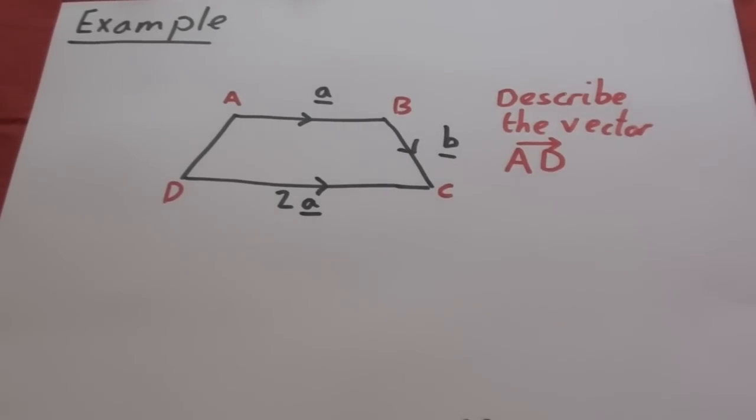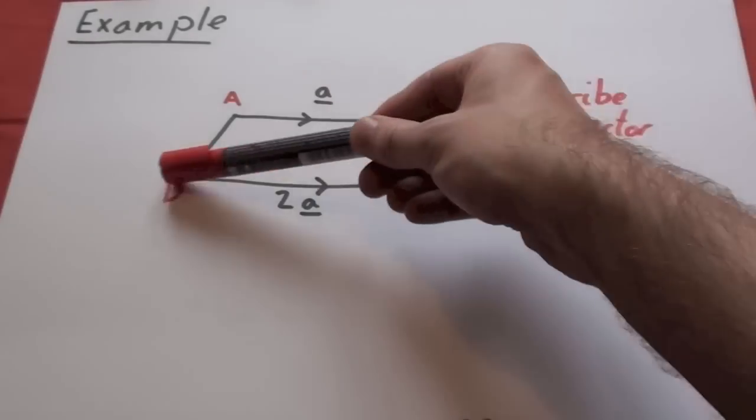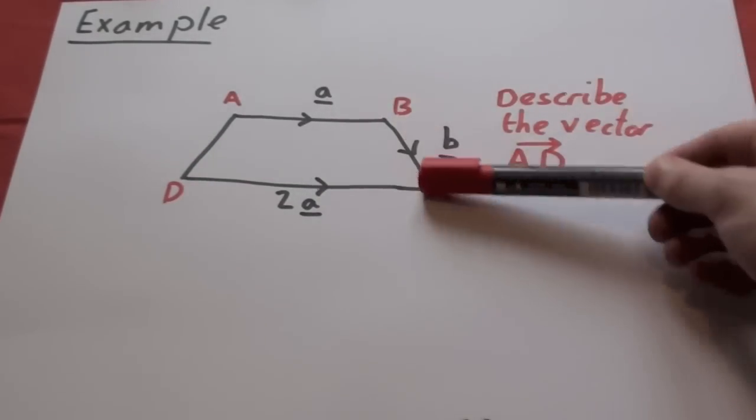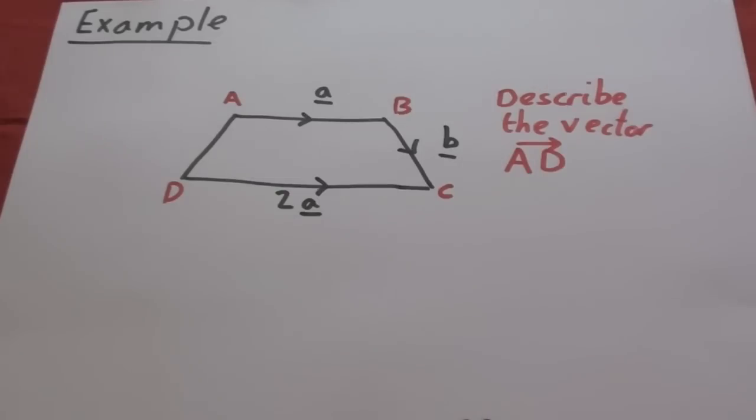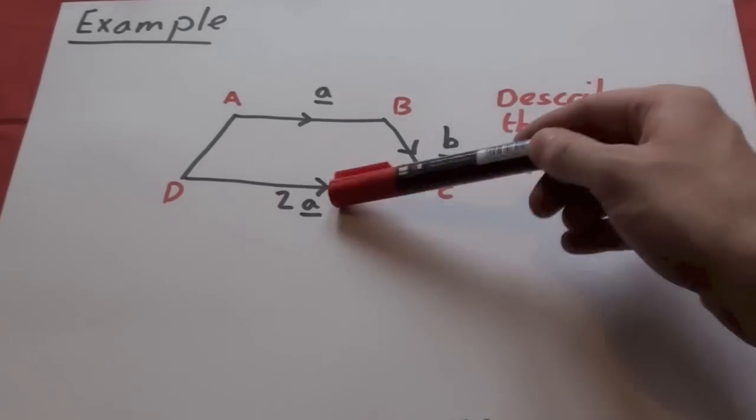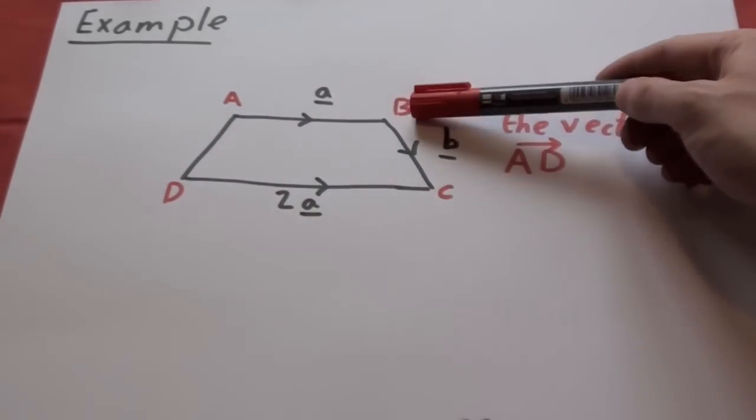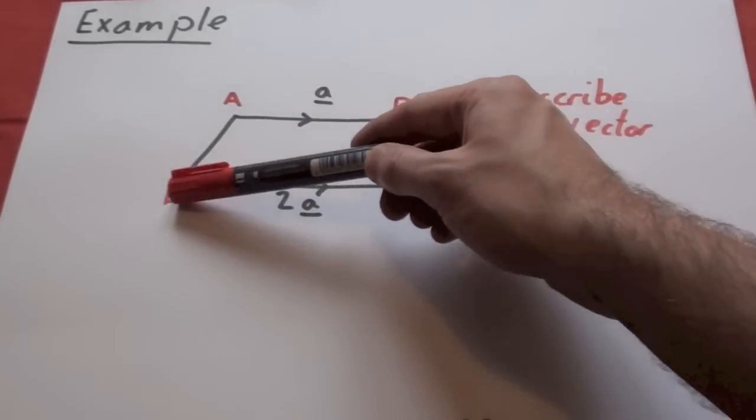So an example. We're going to be describing the vector AD. Here is a trapezium. We've got A, B and 2A noted on there. We can go in the direction of the vectors but we can't go AD.